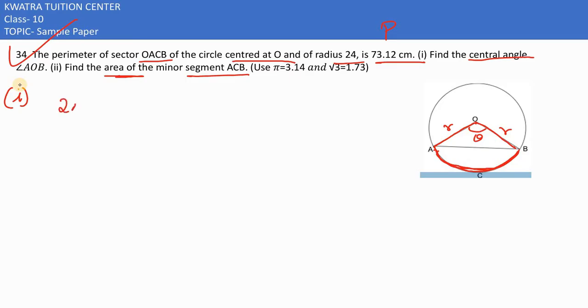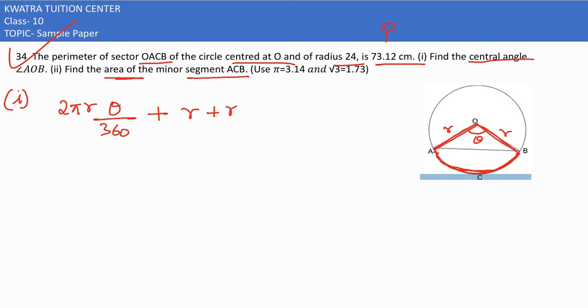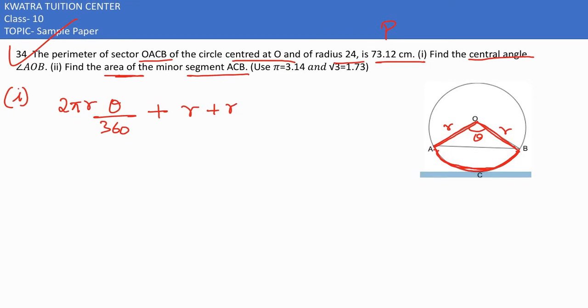So it would be 2πr theta over 360 plus the radius. If we consider our whole perimeter, r plus r to add, then it is totally equivalent to 73.12 cm.